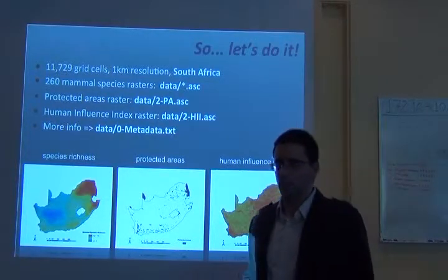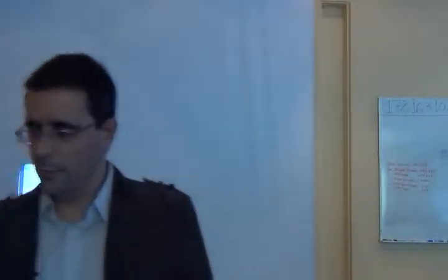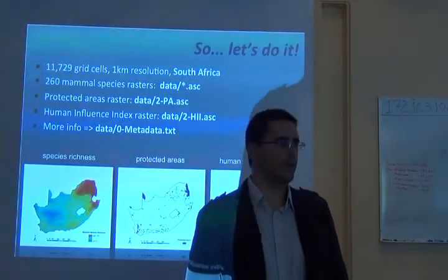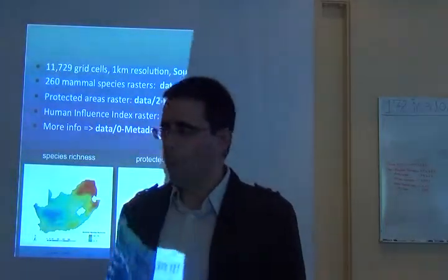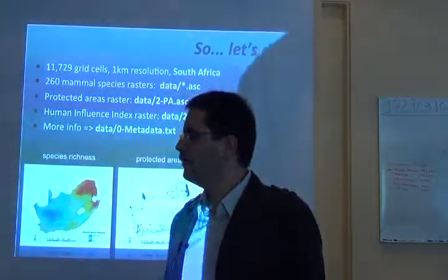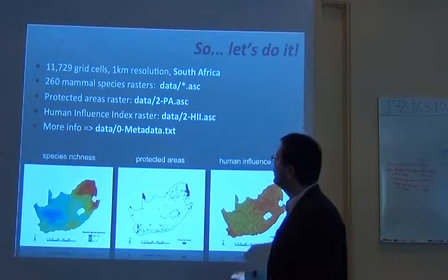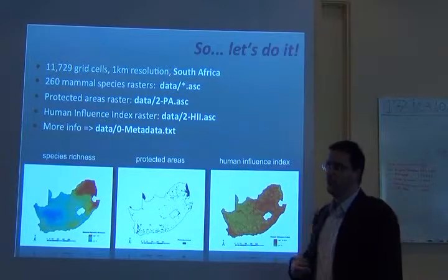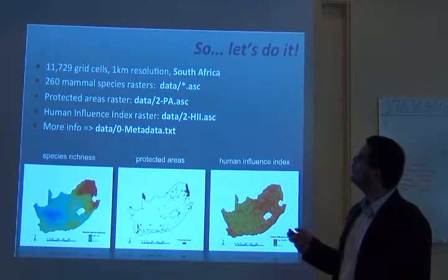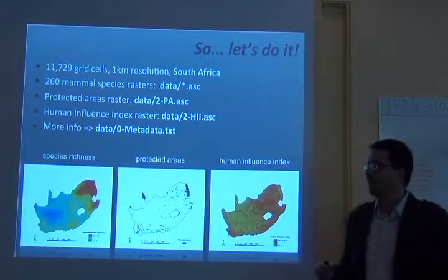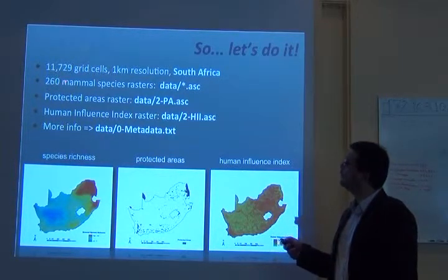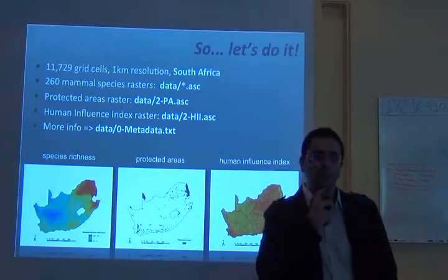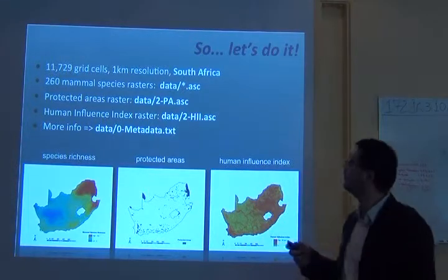So, can we start working on it? Everybody has the data. Yes or no? Yes. Okay. What is this data? So, we have South Africa. It's a grid with 11,729 grid cells at one kilometer resolution for South Africa. We have the distribution of 260 mammal species. There will be 260 mammal species raster files in your folder.